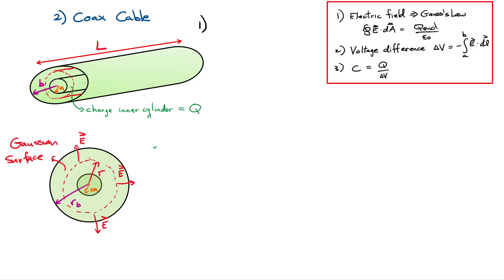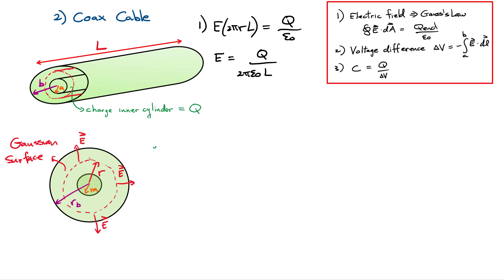Now let's do the coaxial cable. Step one is applying Gauss's law. We consider a Gaussian surface — a red cylinder — this is a two-dimensional view. The field produced by the charged inner conductor points radially outward. That simplifies the left-hand side of Gauss's law to the magnitude of the field multiplied by the area of the Gaussian surface. The area of the whole surface is the circumference two pi r multiplied by the length L of the Gaussian surface. This equals the total charge q divided by epsilon zero. So the magnitude of the field is q divided by two pi epsilon zero L, and it is inversely proportional to the distance r from the center.